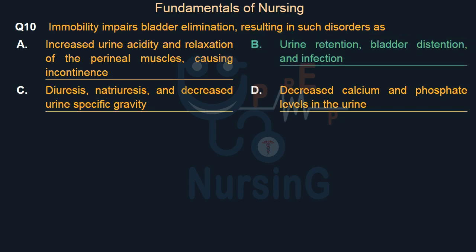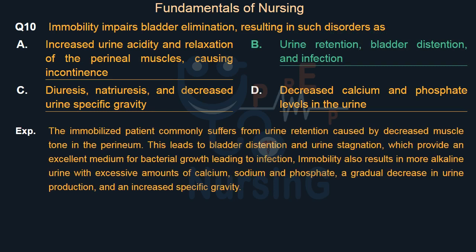The immobilized patient commonly suffers from urine retention caused by decreased muscle tone in the perineum. This leads to bladder distension and urine stagnation, which provide an excellent medium for bacterial growth leading to infection. Immobility also results in more alkaline urine with excessive amounts of calcium, sodium, and phosphate, a gradual decrease in urine production, and an increased specific gravity.